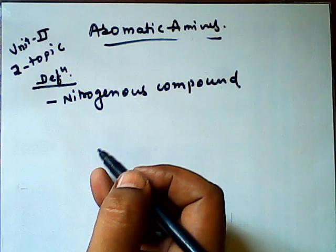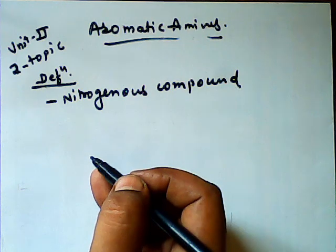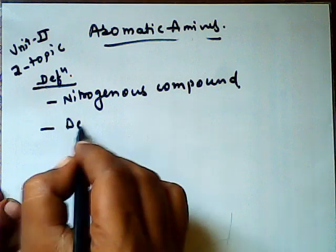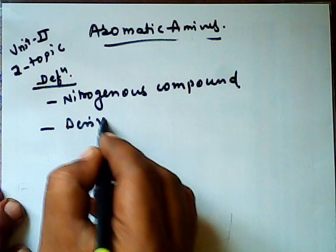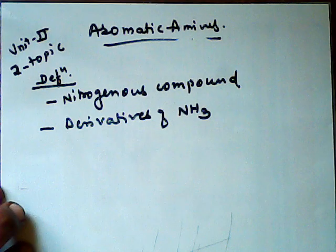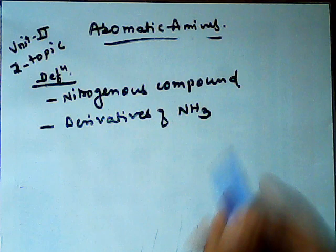These compounds which can be regarded as derivative of Ammonia. Aromatic Amines are a derivative of Ammonia. What is the derivative of Ammonia? Because it is NH2. Ammonia has three hydrogens.